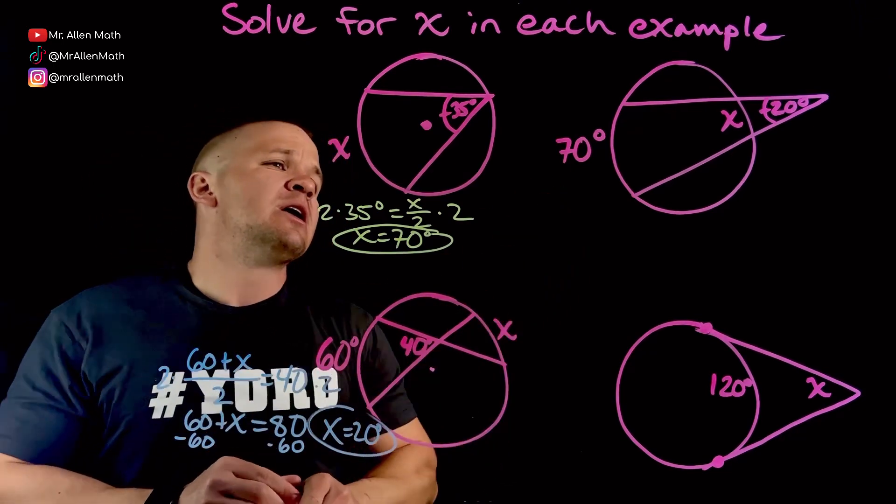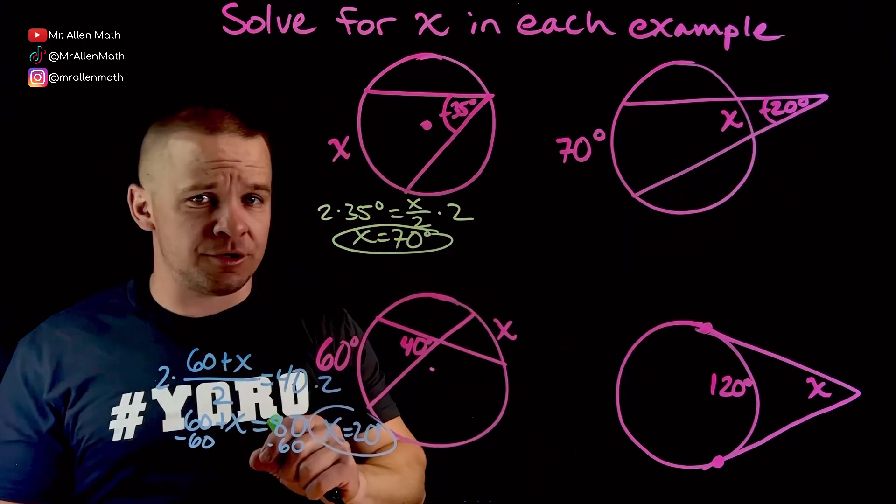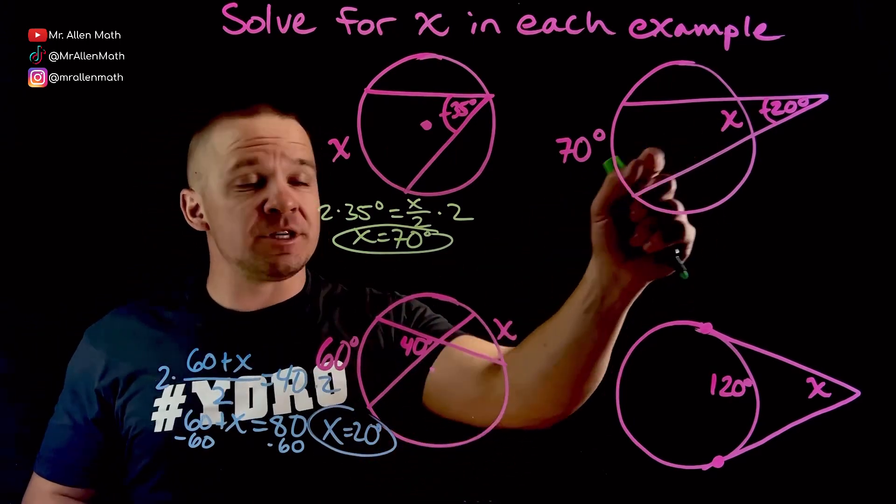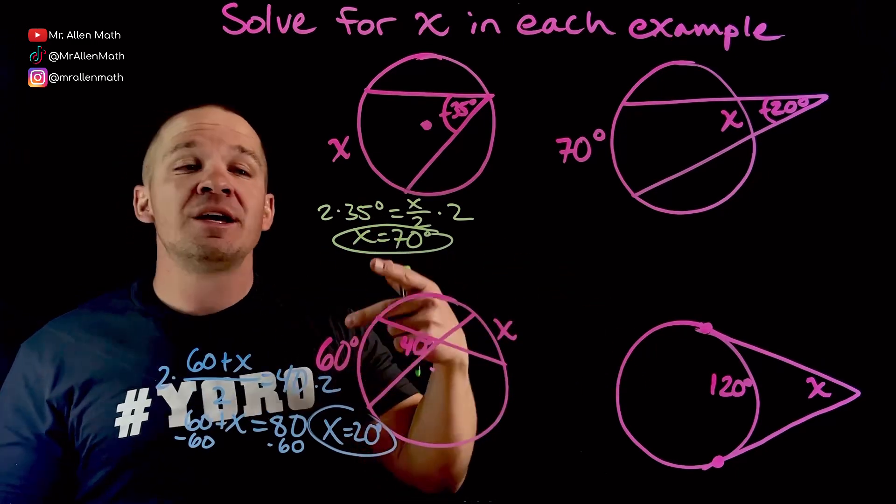Alright, I got green this time. Now, over here, where is my angle? It is outside of the circle, therefore it's an out angle. So let's go ahead and set that up. That's the difference of the two arcs divided by 2. Big arc minus small arc over 2 is going to equal that angle.